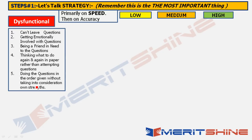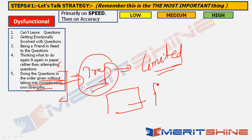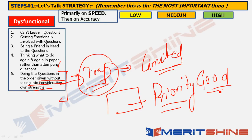The fifth dysfunctional characteristic: doing questions in the order given without considering your own strengths. Many people think going through the paper once and making a priority order is a bad idea. Actually, not doing so is the bad idea. Setting a priority is a very good idea, especially in English, because it will entirely change your score sheet. We'll see it in action today.